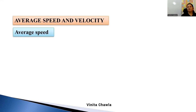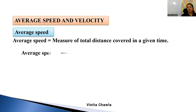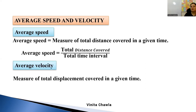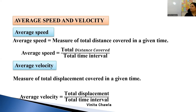Average speed is the measure of total distance covered in a given time — it is total distance covered upon total time taken. Suppose an object covers distance S1 in time T1 and S2 in time T2. Total distance is S1 plus S2 and total time is T1 plus T2. Similarly, average velocity is total displacement upon total time taken.